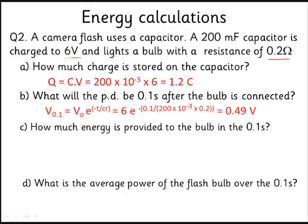We can go straight to voltage: V = V₀e^(-t/CR). If you plug all the numbers in, that gives you 0.49 volts. So the voltage has gone from six volts to 0.49 volts.